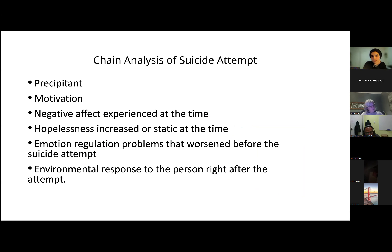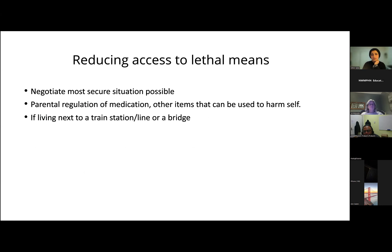When you see people in the aftermath of a suicide attempt, talk about the precipitants, the motivation, and the affect experienced at the time — whether it was anger, anxiety, depression, embarrassment, shock, or panic; it's not always assumed to be depression. Consider whether hopelessness increased or was static, and whether there were emotional regulation problems that worsened at the time of the attempt. Environmental response to the person right after the attempt is also important. Finally, reducing access to lethal means is quite important — studies have shown that when you reduce access to lethal means, the person has to spend time looking for an alternative method, and in that time you can actually try to prevent their suicide.